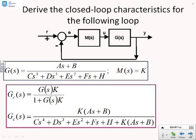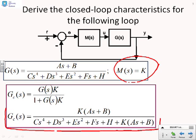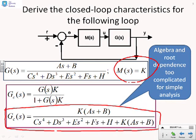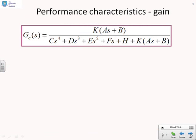Let's summarise the scenario. We've got this closed loop — you can see a compensator M(s) and a system G(s). We're going to assume that the compensator is given by a simple proportional gain K. If we calculate the closed loop transfer function for these two systems, you'll see the answers given below: K times (AS + B) over a quite complicated denominator. The key point is that the algebra and the root dependence are too complicated for simple analysis — you will do that with the root loci tool.